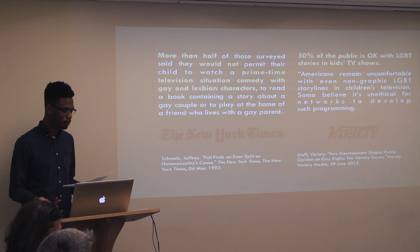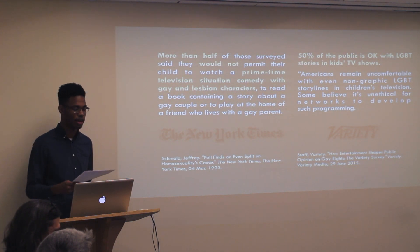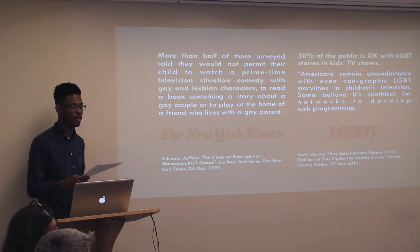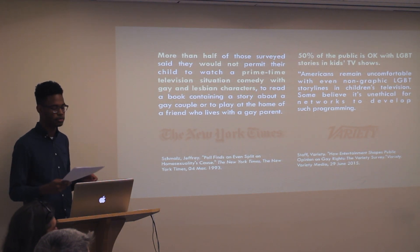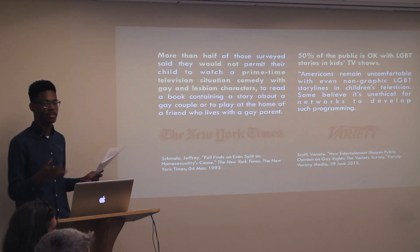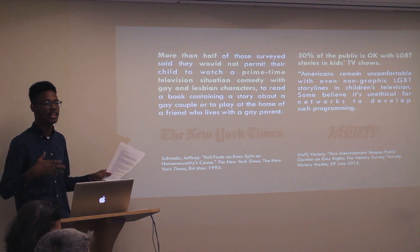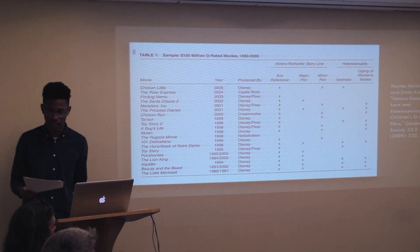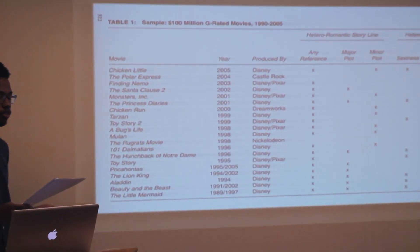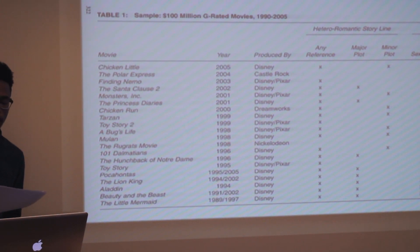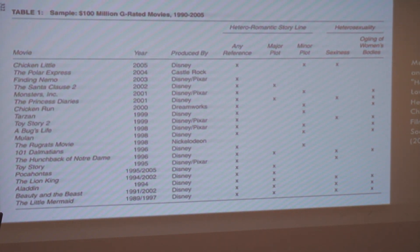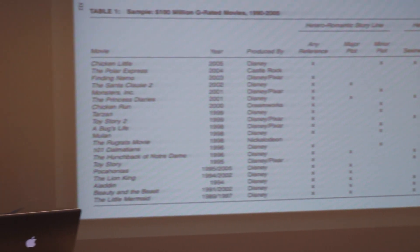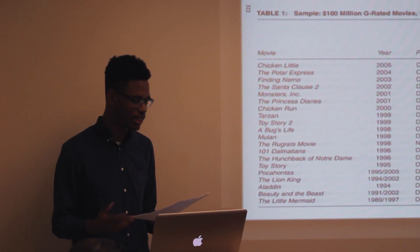These cultural fears are supported by statistical data. In 1993, a New York Times poll concluded that more than half of people would not permit their child to watch a primetime TV comedy with gay characters. And fast forward over 20 years later to 2015, where a Variety survey showed that things just haven't changed, with only 50% of the public being okay with LGBT stories in kid shows — which exemplifies what I called queer maturization, because they feel it's unsuitable for childhood viewers. And looking at how pervasive heteronormativity is in the industry, Martin and Kazik's 2009 study entitled Heteroromantic Love and Heterosexiness in Children's E-rated Films concludes that heteronormativity remains as prevalent as ever, proving that 75% of the highest grossing children's films of all time use heteroromanticism as a driving plot point.